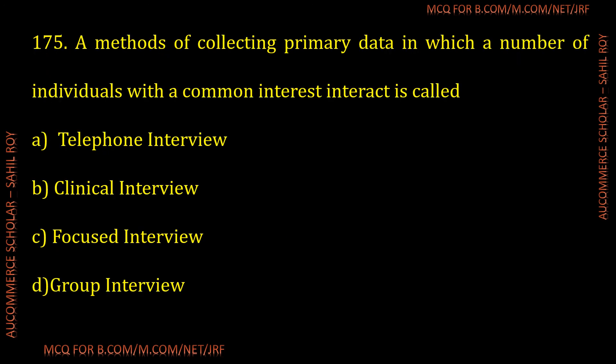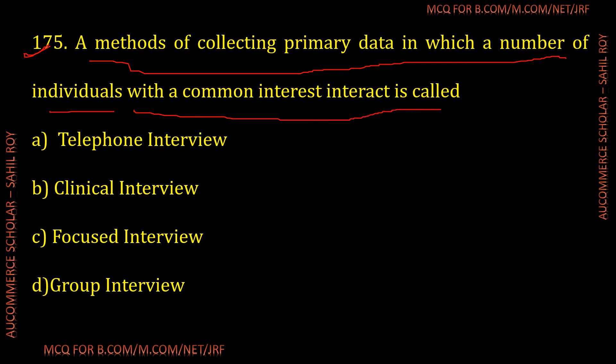Question number 175: A method of collecting primary data in which a number of individuals with a common interest interact is called what? The correct answer is group interview — Option D is the correct answer for the given question.